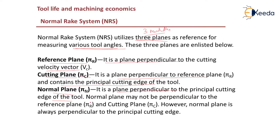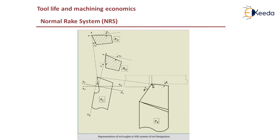The normal plane Pi_n is the plane perpendicular to the cutting edge plane Pi_c. It may not be perpendicular to the reference plane Pi_r or the cutting plane Pi_c. However, the normal plane is always perpendicular to the principal cutting edge. This is the key difference between ORS and NRS.